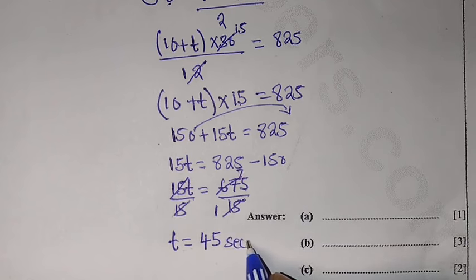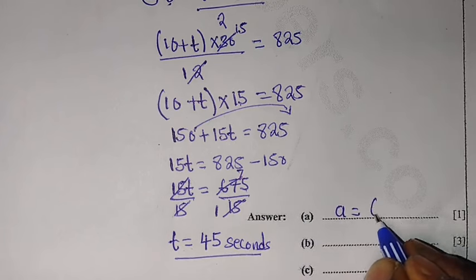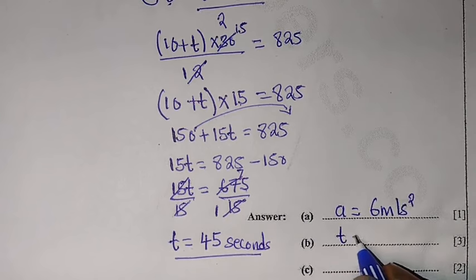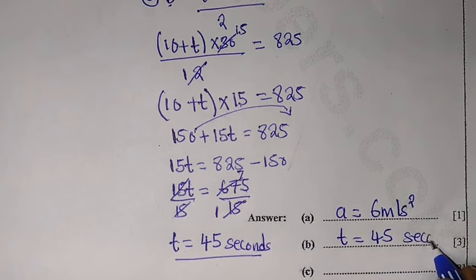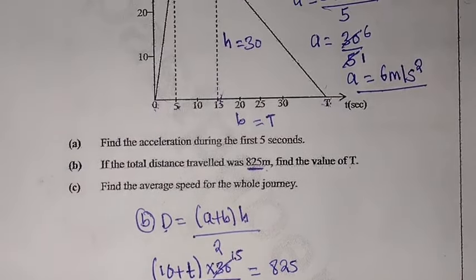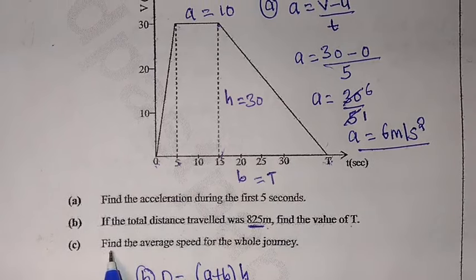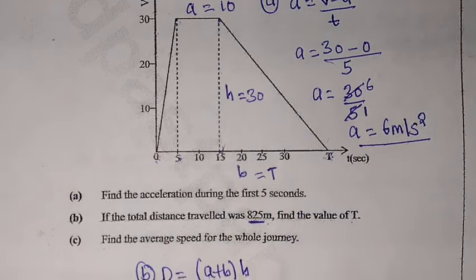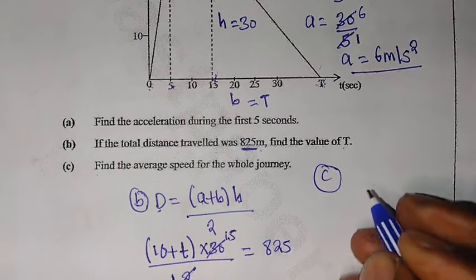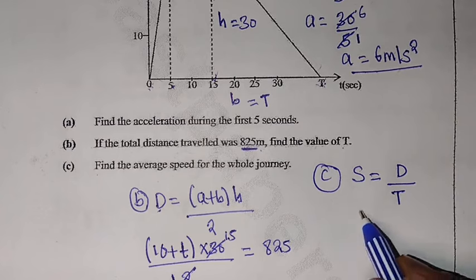So to summarize so far: acceleration equals 6 meters per second squared, and T equals 45 seconds. Now for question C: find the average speed for the whole journey. To find the average speed, you use the formula: speed equals total distance over total time taken.